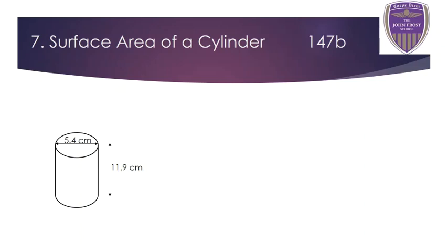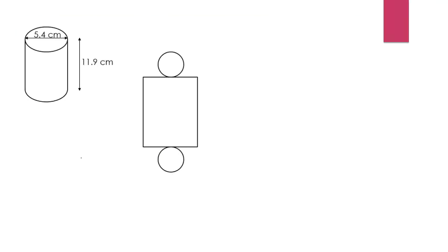Section seven asks us to calculate the surface area of the cylinder. The surface area is the outside. A cylinder has three faces: the top circle, the bottom circle, and the wrapped-around rectangular section in the middle. The best way is to draw a net. For the top and bottom circles, we use π r² — so π × 2.7² for each.